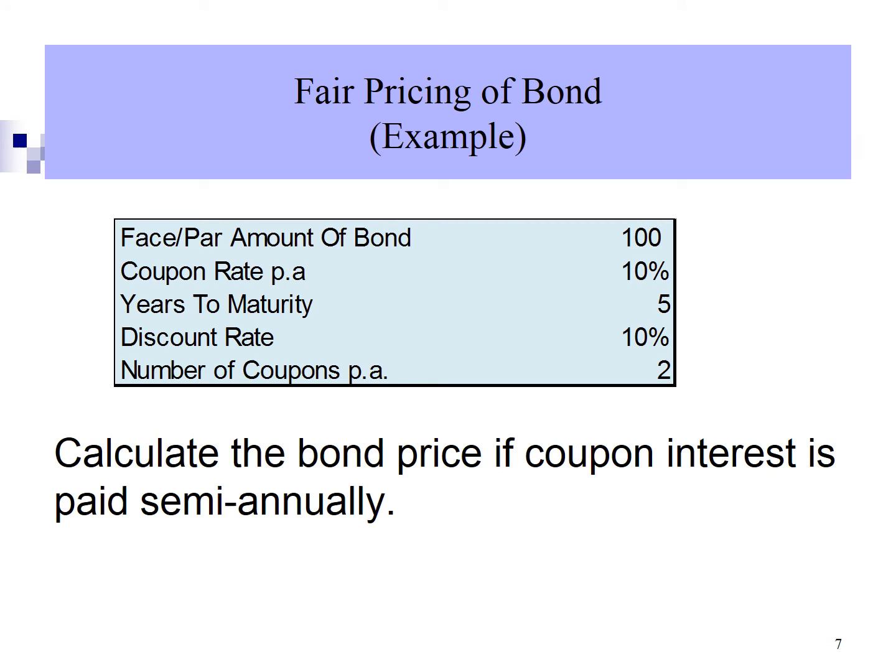Let's look into an example. Here we have a bond with par value of 100. The annual coupon rate is 10%. There are 5 years to maturity. The discount rate is 10%. Coupon interest is paid twice a year. Our objective is to calculate the bond price if coupon interest is paid semi-annually.